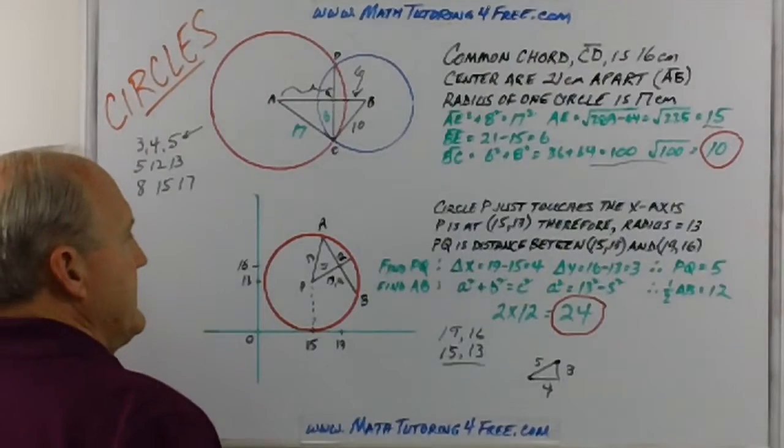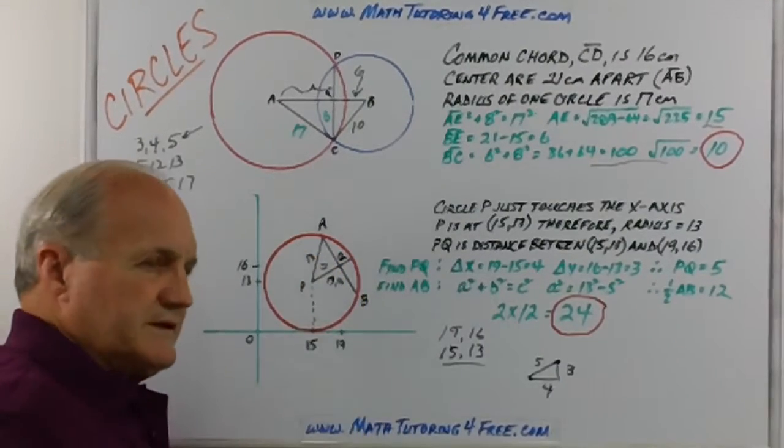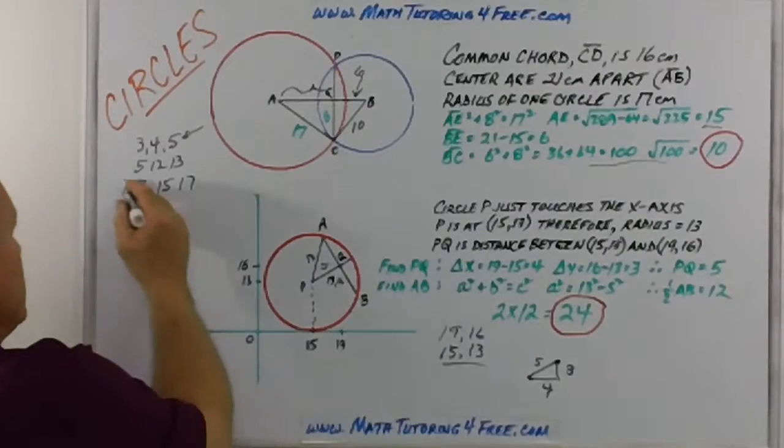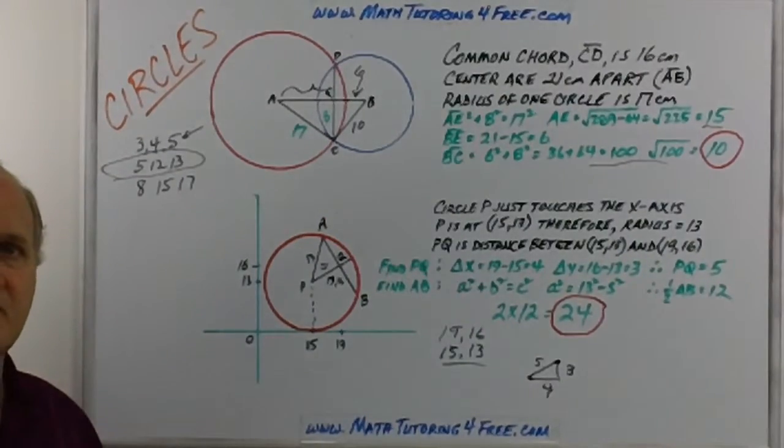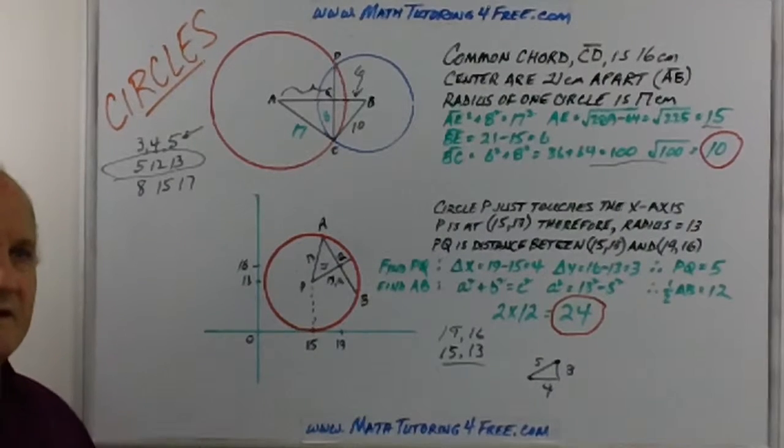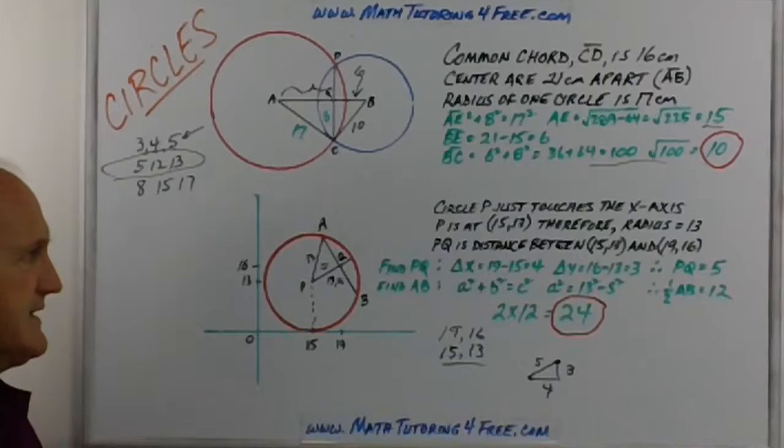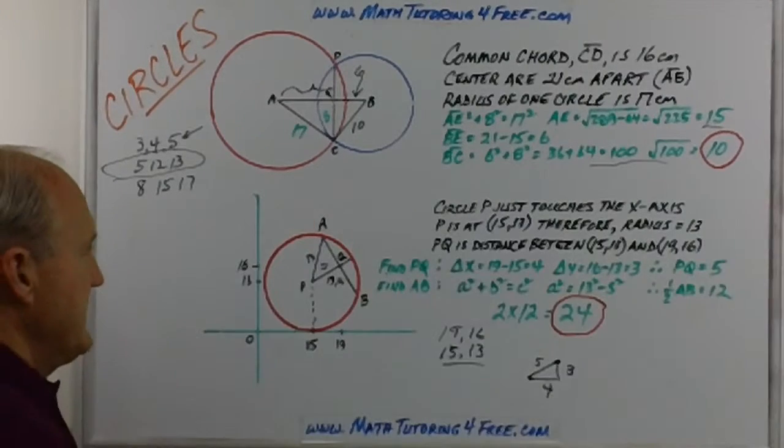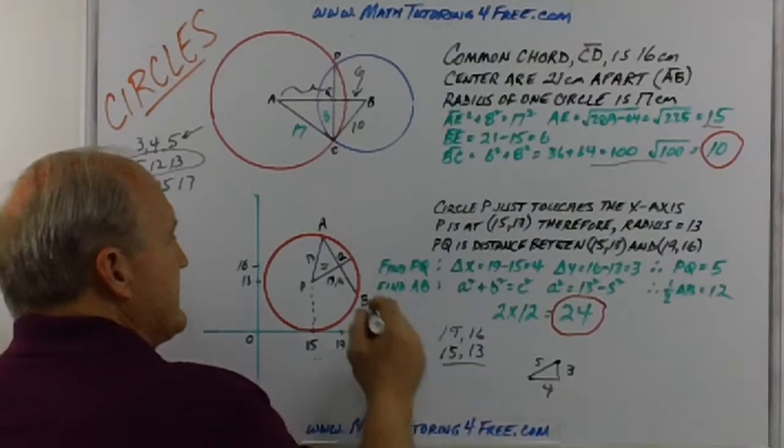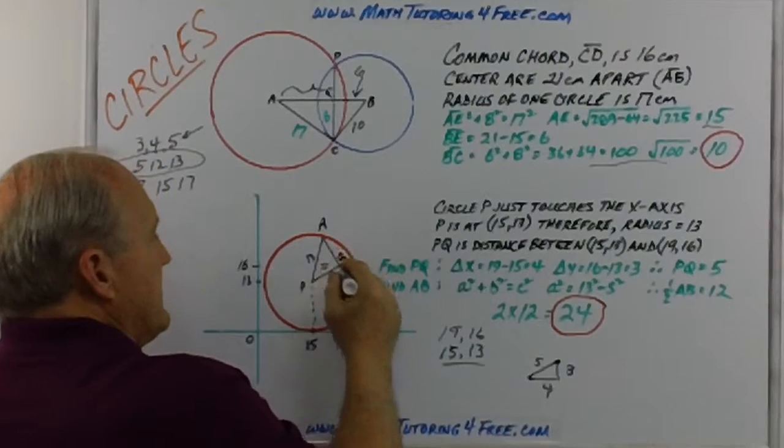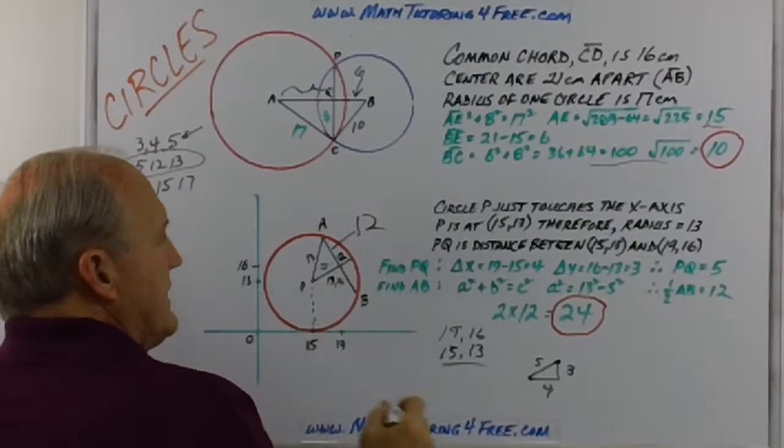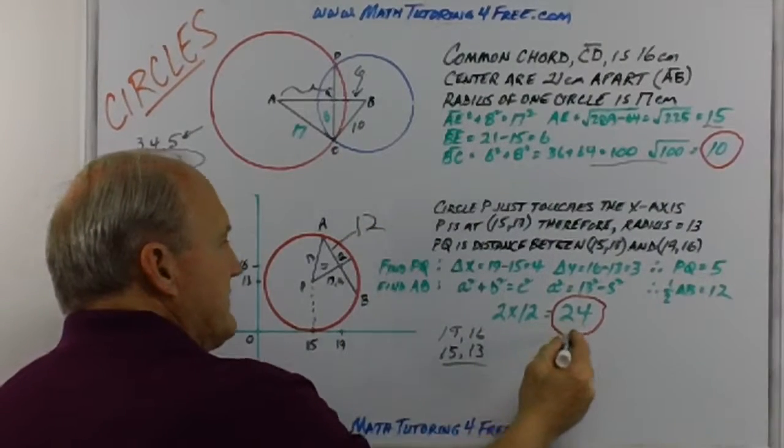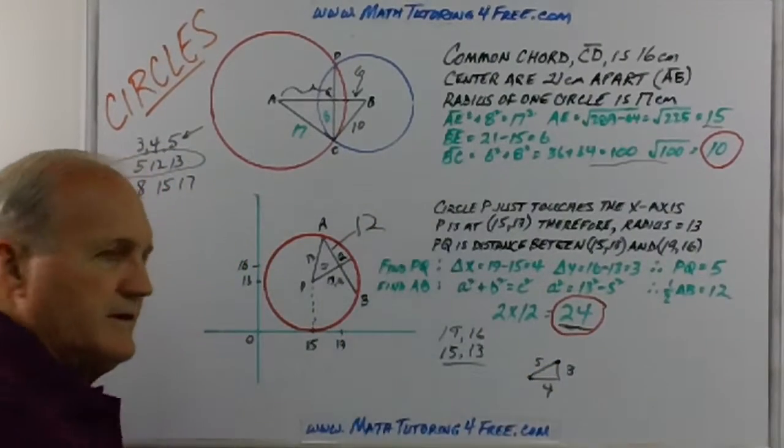And again, 5-13, what's the other one of those triples that we talked about? You ought to lock into them because it saves you a lot of time and effort on the test if you know those ahead of time. With that, we find that this half of the chord AQ is 12, and if that half is 12, we double it and we get 24.